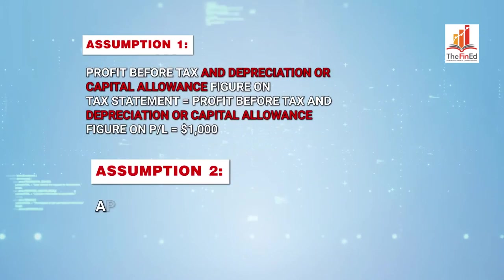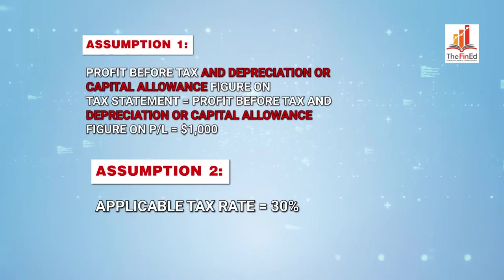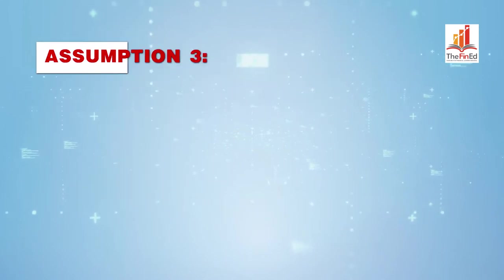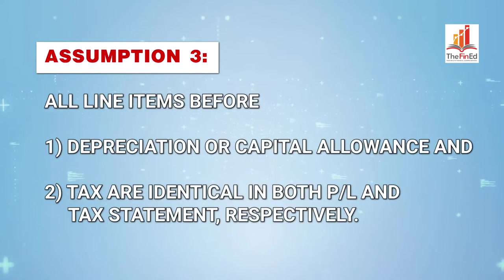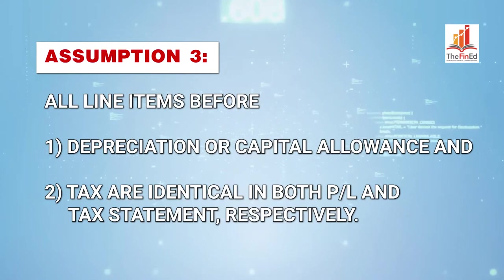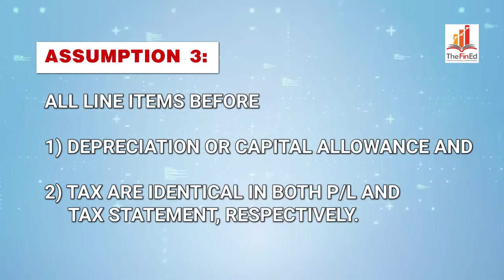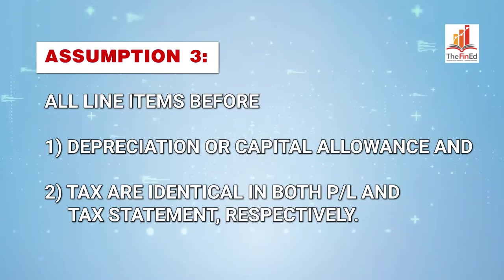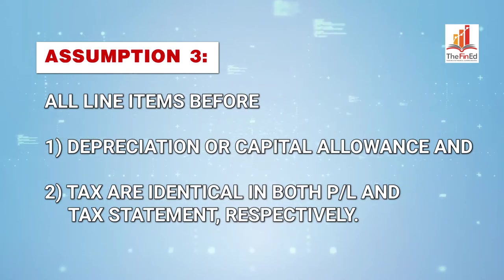Assumption number two: the applicable tax rate is 30%. Assumption number three: all the line items that come immediately before the profit before tax and depreciation or capital allowance are exactly identical in either of the two statements.